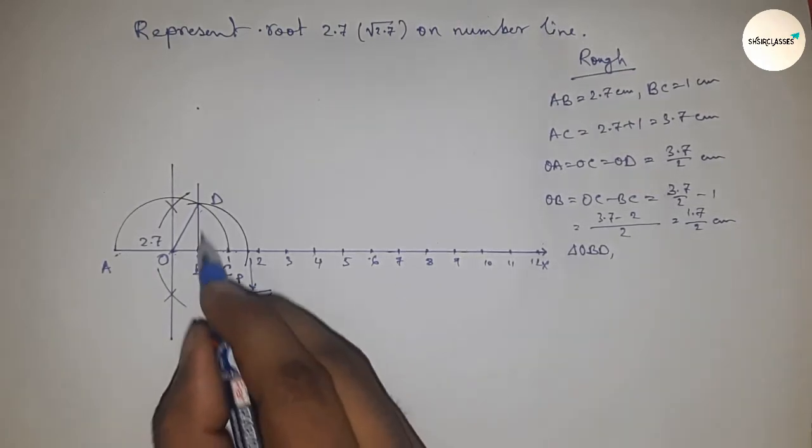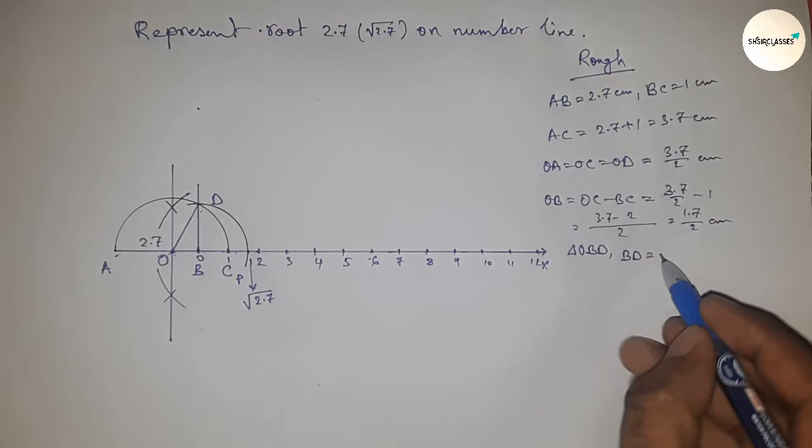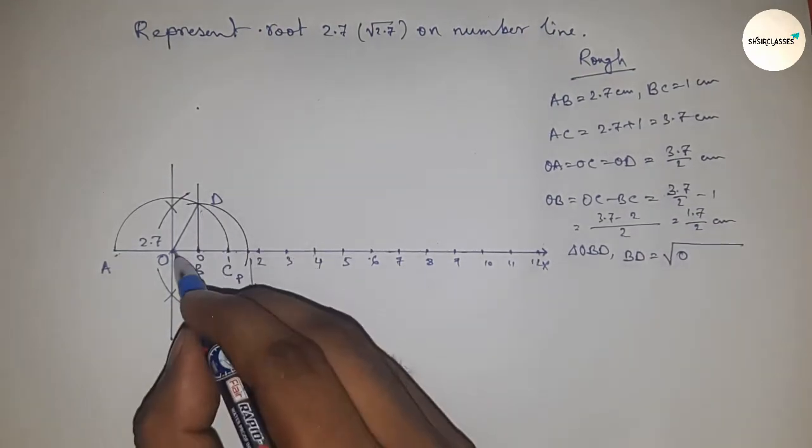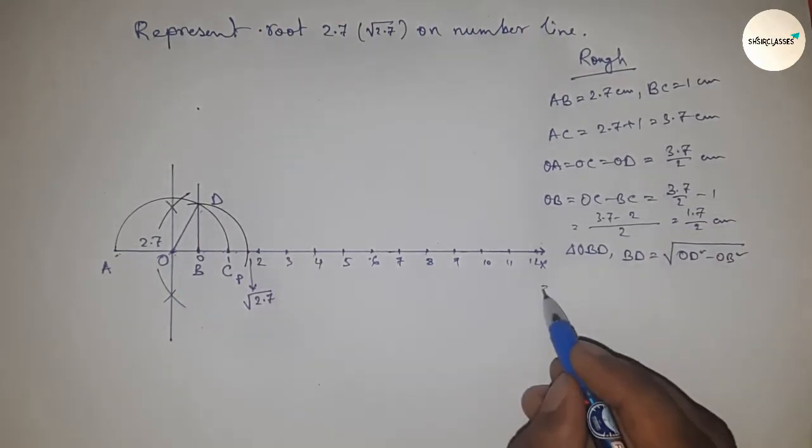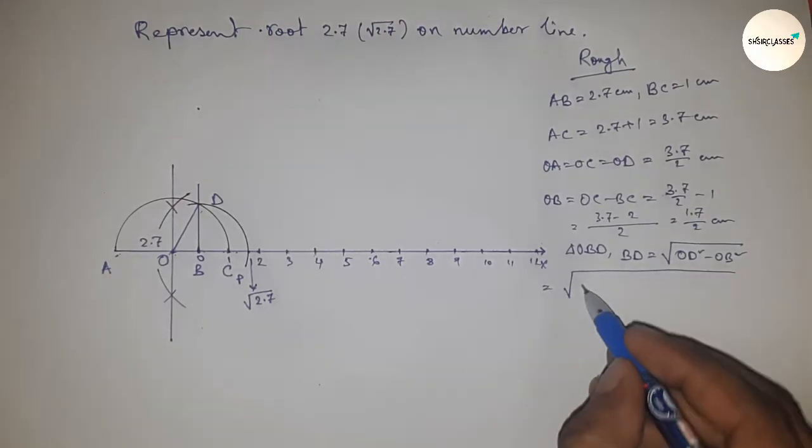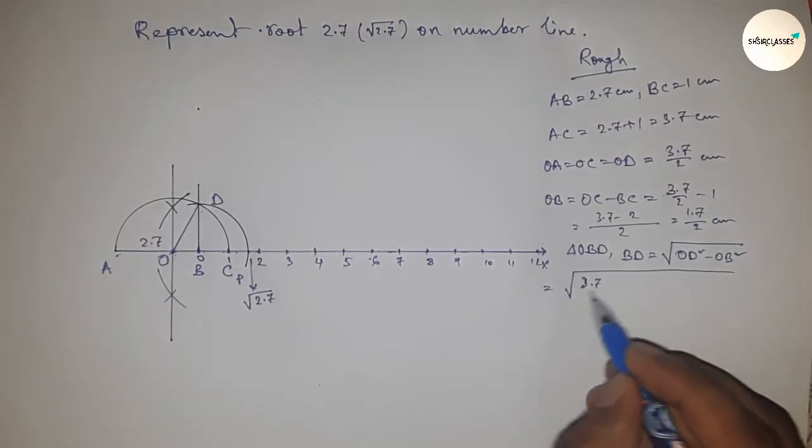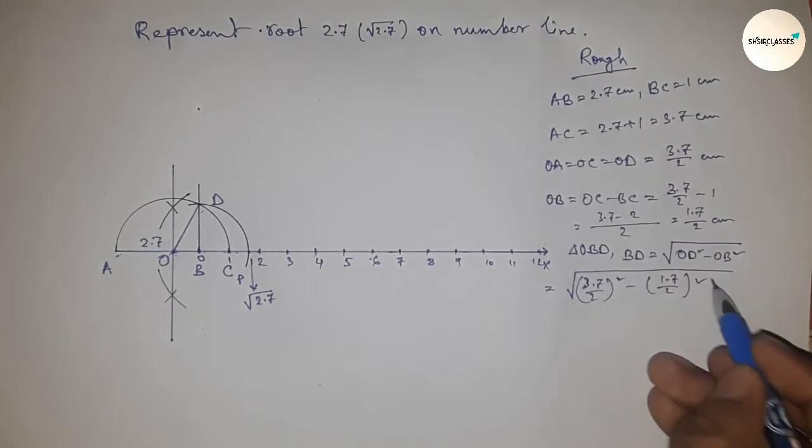We can write BD equals square root of hypotenuse squared minus base squared. Putting the value of hypotenuse and base, this is square root of (3.7 by 2) whole square minus (1.7 by 2) whole square.